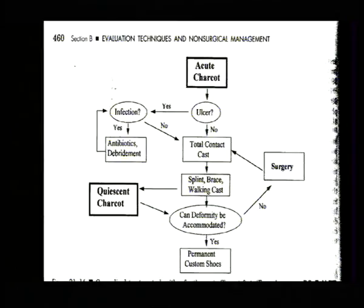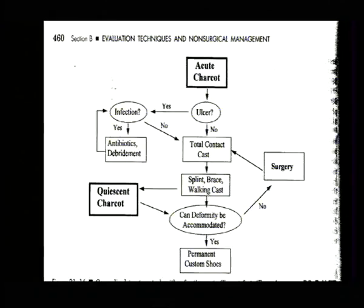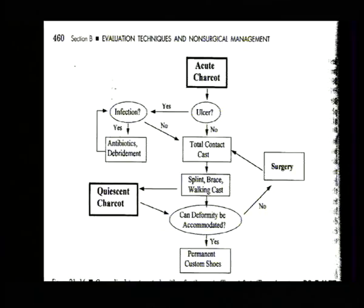In an acute Charcot, if there is an ulcer you have to treat it like any ulcer. But otherwise you have to give a total contact cast. That is the gold standard conservative treatment. If you keep on giving the cast until the temperature becomes equal or you get radiological osteoblastic evidence, most of the Charcot will fuse conservatively. Even wounds, if there are any, will heal provided you are patient.